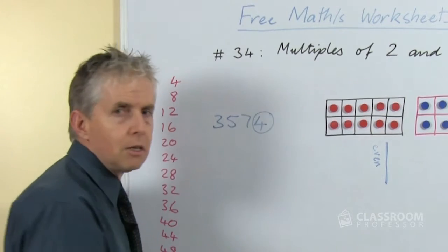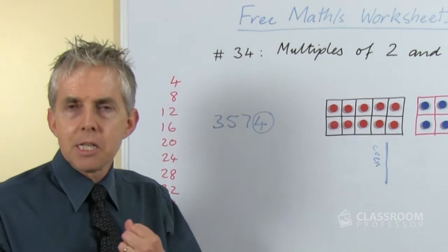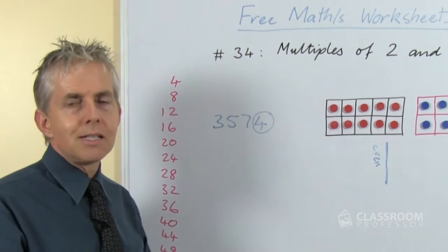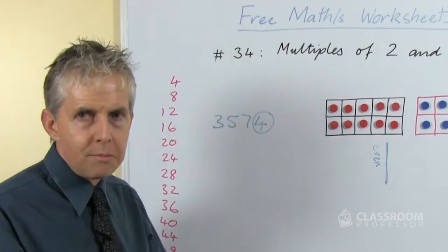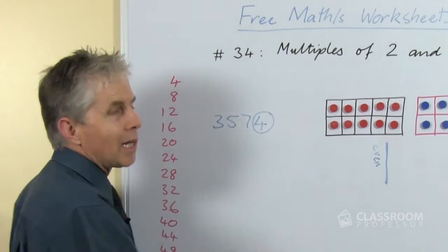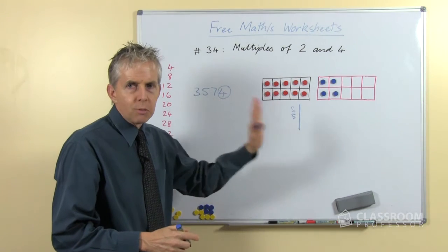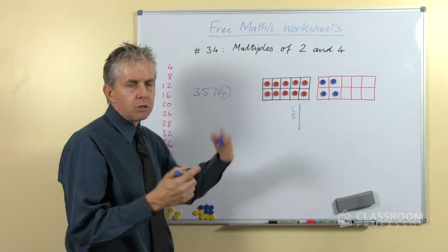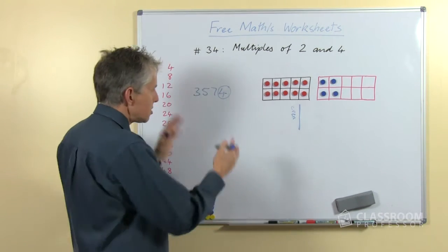So the test for divisibility by 2, the test to see if a number is a multiple of 2, same thing, is look at the ones digit. Of course we're not looking at decimal fractions, it's got nothing to do with fractions, this is just integers.